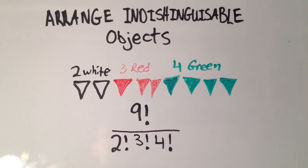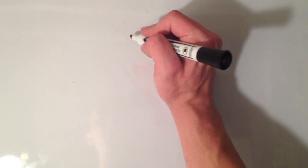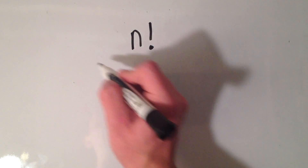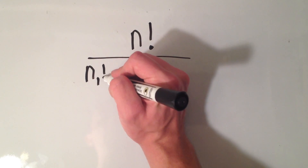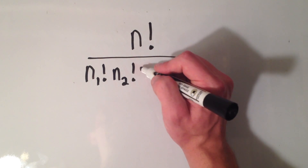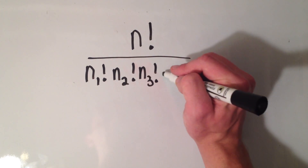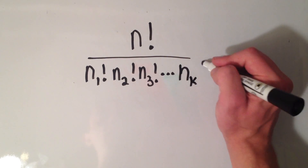I'm not going to compute this — you could figure that out — but this is often what they're looking for in a probability class. In general, when you have n objects and a certain number of groups of them are indistinguishable, the formula is n factorial divided by however many are in the first group factorial, times however many are in the second group factorial, times however many are in the third group factorial, and so on for however many groups you have.